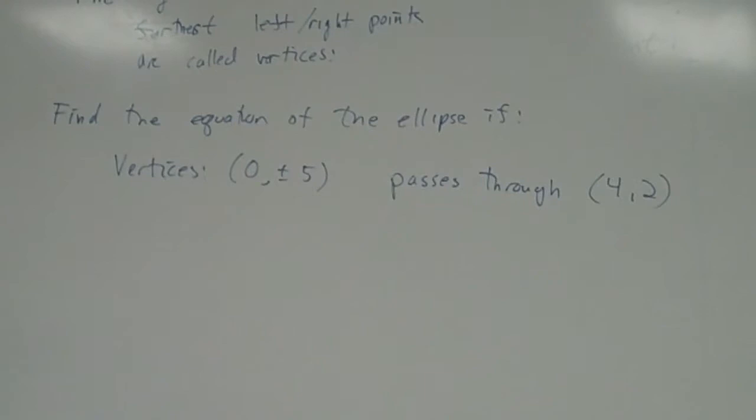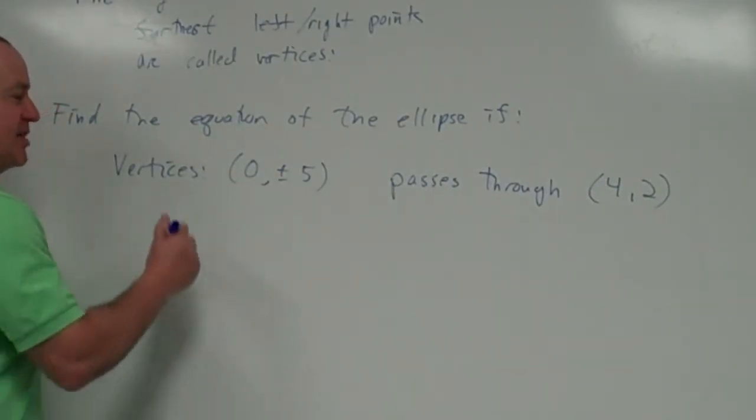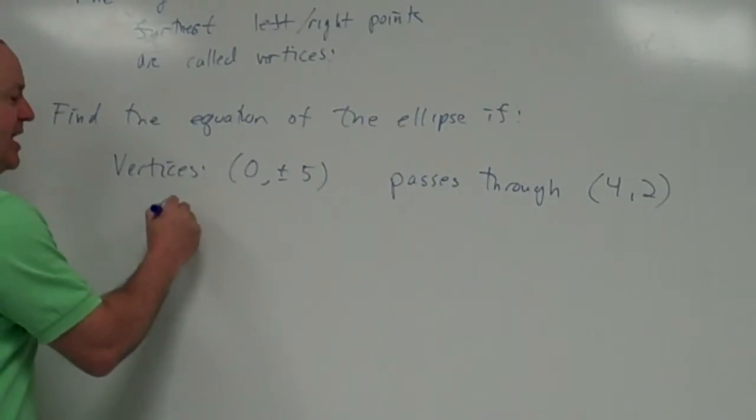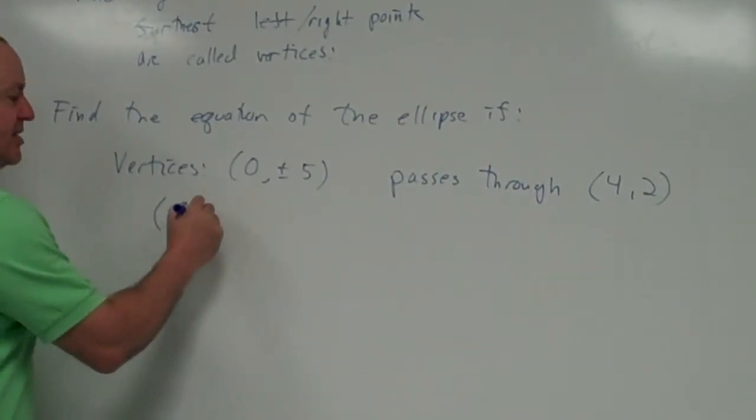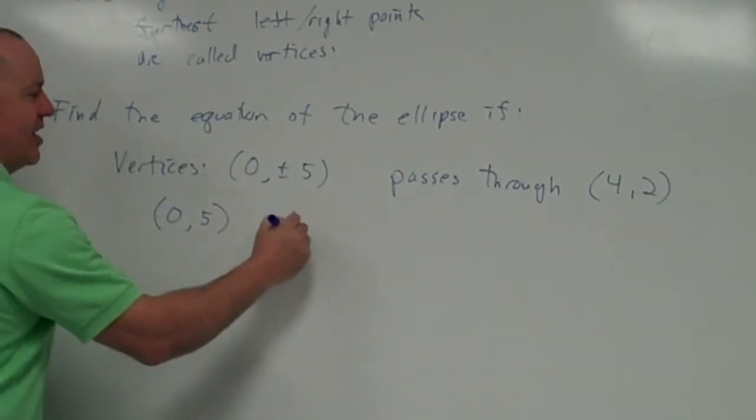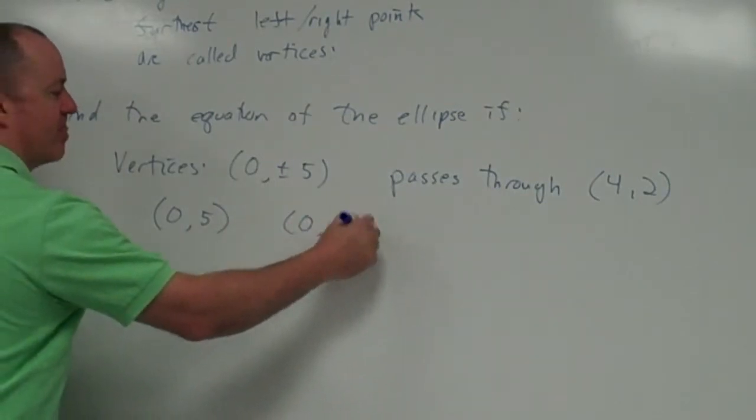Okay, we don't know much about this ellipse. The vertices are 0, plus or minus 5. That means, at one end, it's at 0, 5. At the other, it's at 0, negative 5.